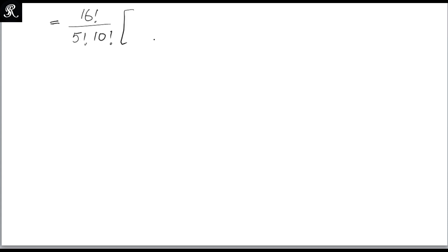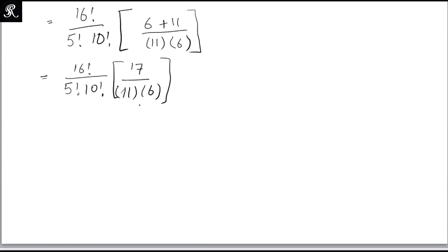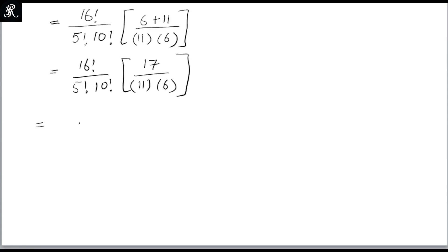The LCM gives us 16! / (5! × 10!) × (6 + 11) / (11 × 6). Since 6 + 11 = 17, this becomes 16! / (5! × 10!) × 17 / (11 × 6), which equals 17 × 16! / (6 × 5! × 11 × 10!).